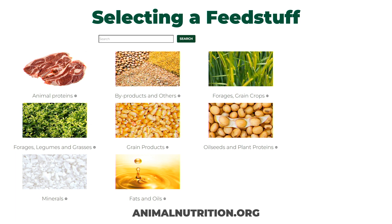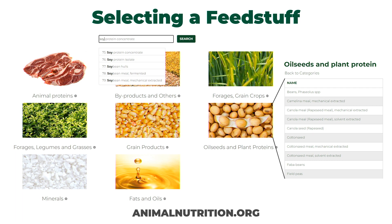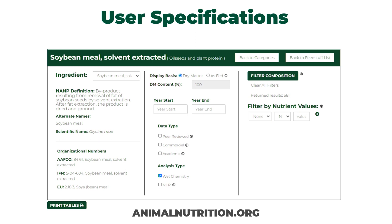Once there — and you do need to register, it's free, but as a USDA-funded program we need to show our impact and understand how many users are using the database — you'll be taken to a page for selecting a feedstuff. We break it down into individual categories for visual navigation, or you can search directly on the top. Typing in 'soybean meal' will bring up every ingredient containing soybean meal, or you can click on an individual category to bring up all ingredients within it.